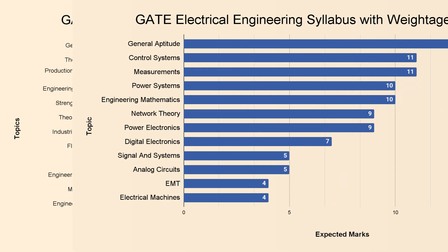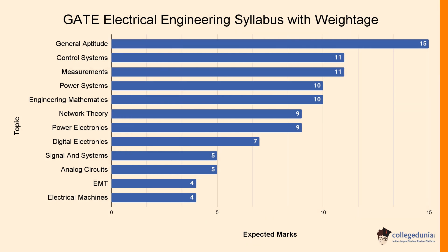Let's check the GATE Electrical Engineering syllabus with weightage. For Control Systems, you can expect questions of 11 marks. For Measurements, you can expect questions of 11 marks. For Power Systems, you can expect questions of 10 marks. For Engineering Mathematics, you can expect questions of 10 marks.